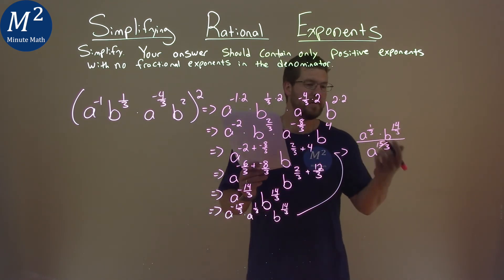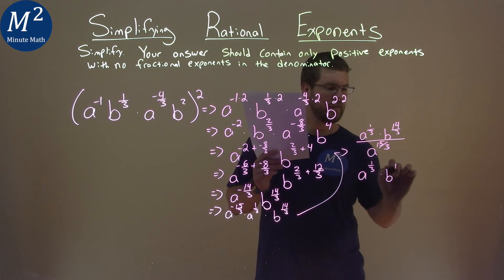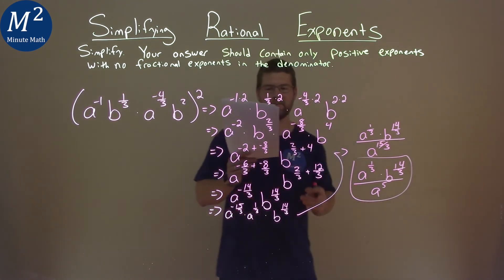Well, 15 divided by 3 is 5. So we have a to the 1/3 times b to the 14/3 all over a to the 5th power. And that is our final answer.